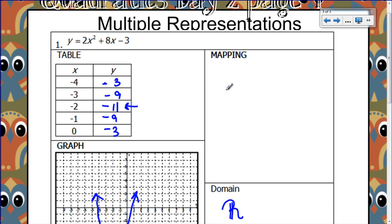I'm mapping. The mapping is where I simply take my domain and range values, my x's and y's, and fill them into these little ovals. I don't list any values that repeat, and I list them in order from least to greatest. The x's are negative 4, negative 3, negative 2, negative 1, and 0. My y values are negative 11, then negative 9, then negative 3. I don't have to list the negative 9 twice or the negative 3 twice.